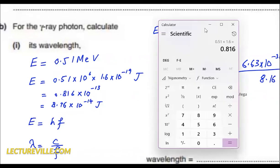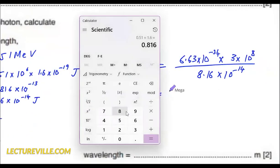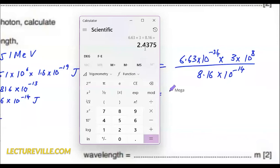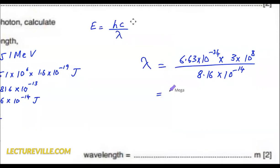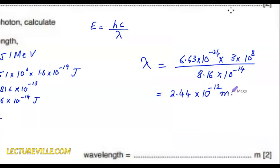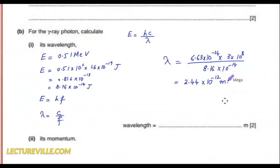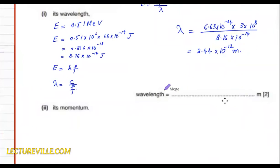The calculator gives 6.63 multiplied by 3 divided by 8.16, which is 2.44. For the powers: minus 34 plus 8 gives minus 26, then minus 14 goes upstairs as plus 14, giving minus 12. So the wavelength is 2.44 into 10 to the power minus 12 meters. You can verify with your calculator — it's approximately 2.44 into 10 to the power minus 12 meters.